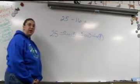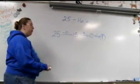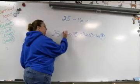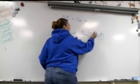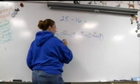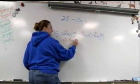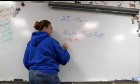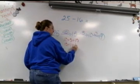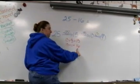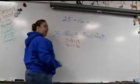To check to make sure we have subtracted all of our 16 from 25, we add up the 10, the 5, and the 1. 10 plus 5 equals 15. 15 plus 1 equals 16. I have subtracted 16 — confirming 25 minus 16.